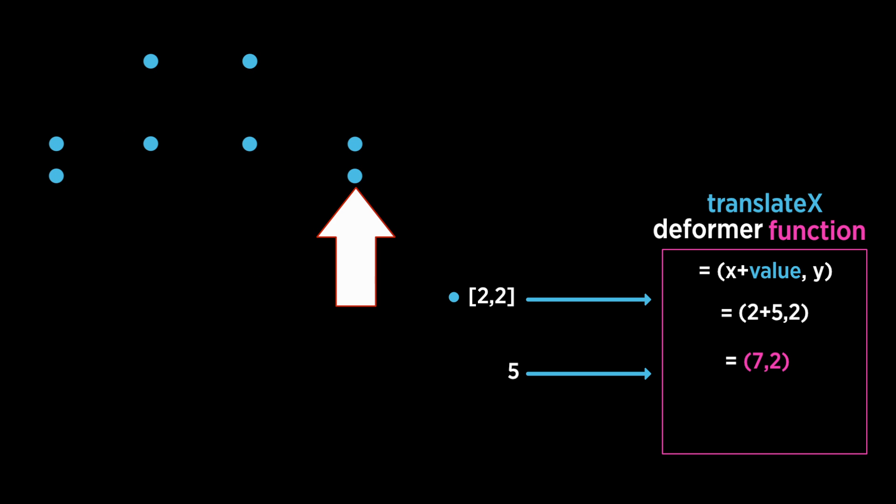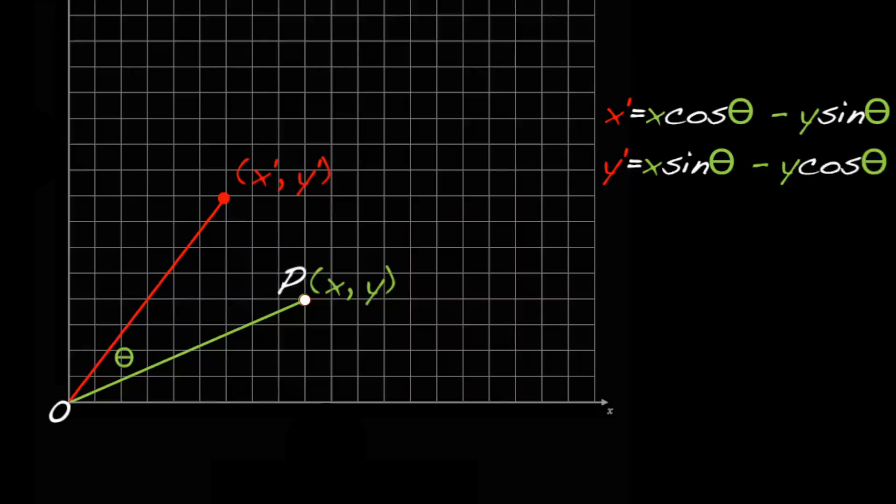All of the deformer functions transform vertices using equations, and the transformation depends on the types of equations used in your functions. The equations used for scaling, rotate, and translation are all different from each other. We cover these equations in detail in our sets and staging lesson.